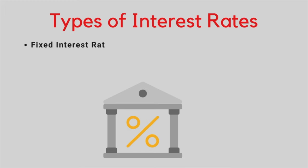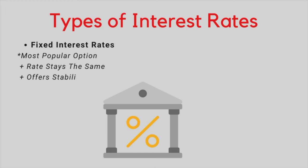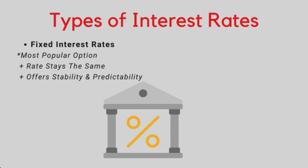One final item we want to touch on is the two types of interest rates that may be available to you depending on your loan type: a fixed rate or an adjustable rate. A fixed rate is the most popular option. Your interest rate stays the same throughout the entire loan term, offering predictability for budgeting, and common terms are anywhere from 15 to 30 years. The benefit is that it offers stability and predictability with a fixed monthly payment. However, if you expect interest rates to drop significantly, then a fixed rate mortgage may not be your best option.